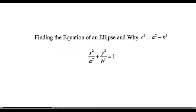In this video we are going to go through and derive the equation of an ellipse, and in the process we're going to see why c squared is equal to a squared minus b squared. I've typed up the standard equation: x squared over a squared plus y squared over b squared is equal to one. I'm going to deal with a horizontal ellipse here, so let's take a look at what the picture is.